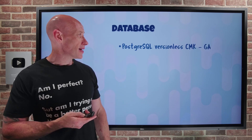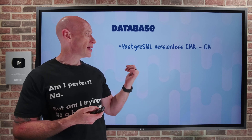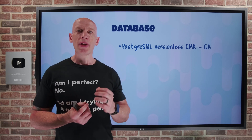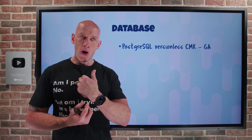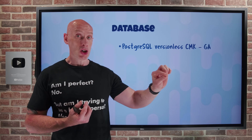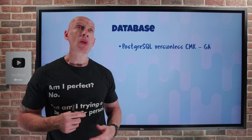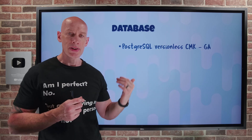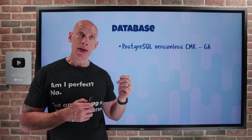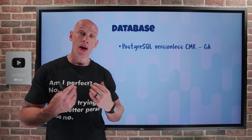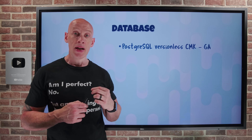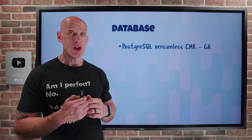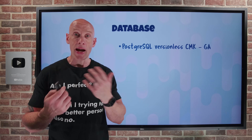On the database side, PostgreSQL versionless customer-managed key is now GA. This means I have the key in my key vault and don't have to pick a specific version — I just reference the key, and whenever it gets rotated to a newer version, PostgreSQL will automatically pick it up. Combined with Azure Key Vault Auto Key Rotation, it's completely seamless with no manual actions needed.